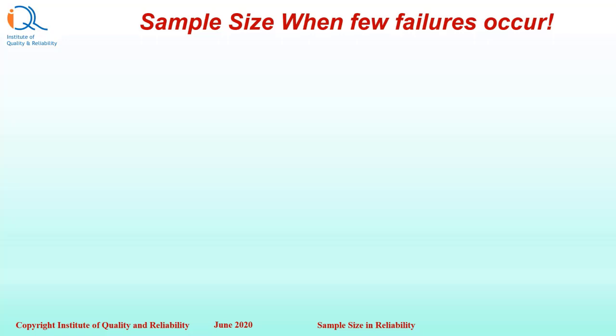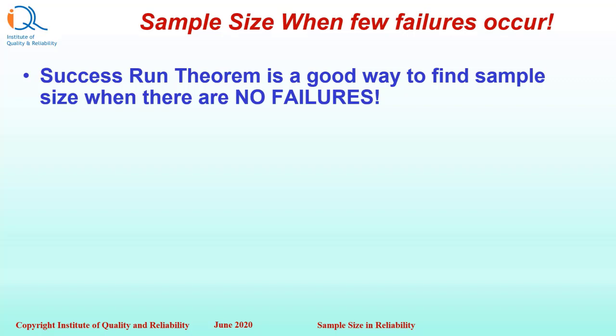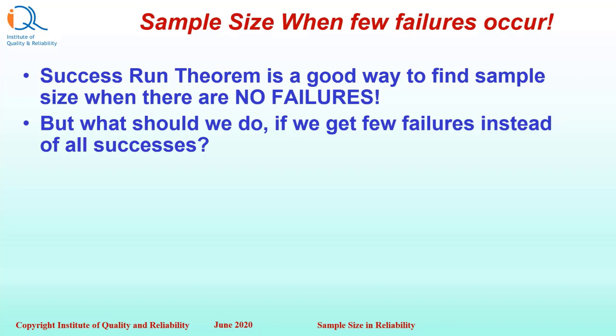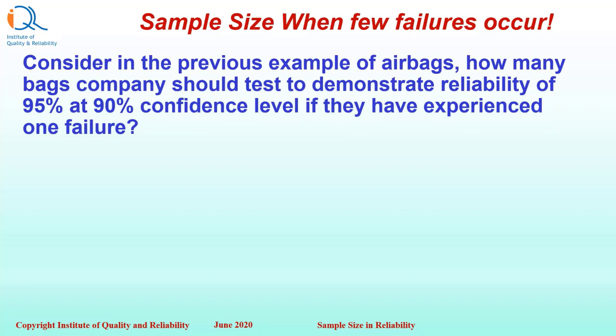The success run theorem is a good way to find sample size when there are no failures. But often we get failures — so what should we do if we get a few failures instead of all successes? Consider the previous airbag example: how many bags should a company test to demonstrate reliability of 95% at 90% confidence level if they have experienced one failure?